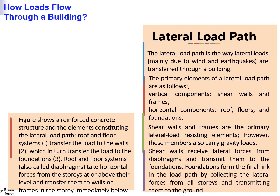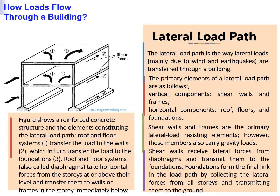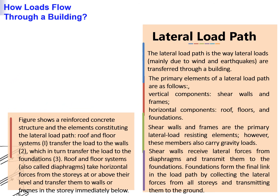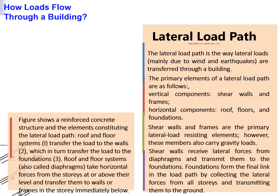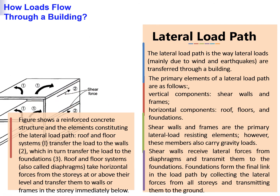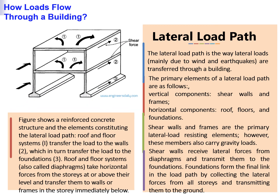The lateral load path is the way lateral loads — mainly due to wind and earthquakes — are transferred through a building. The primary elements of a lateral load path are: vertical components such as shear walls and frames, and horizontal components including roof, floors, and foundations. The figure shows a reinforced concrete structure and the elements constituting the lateral load path.